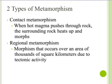There are two types of metamorphism. The first kind is contact metamorphism. This occurs when magma will come up through rock, and the surrounding rock will then heat up and morph. So the surrounding rock is in direct contact with the magma, therefore it morphs.